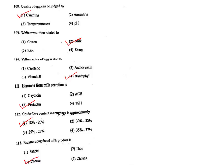Q113. Enzyme-coagulated milk product — the milk product in which enzymes are used to coagulate milk is cheese. The correct answer is option 3.